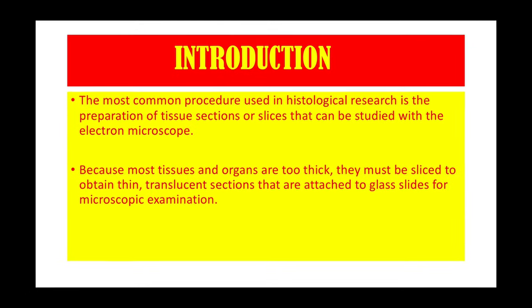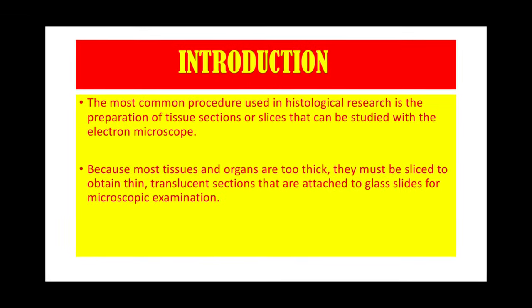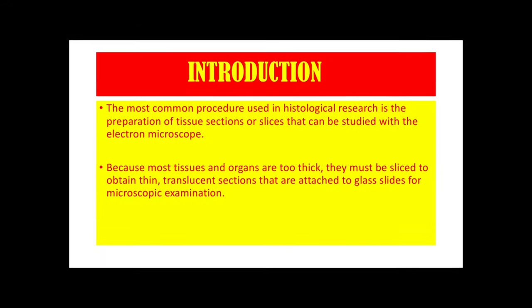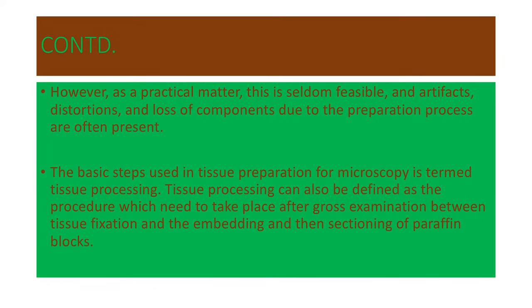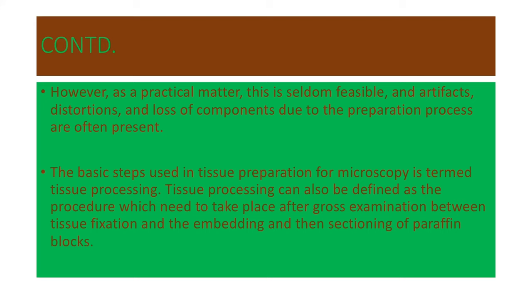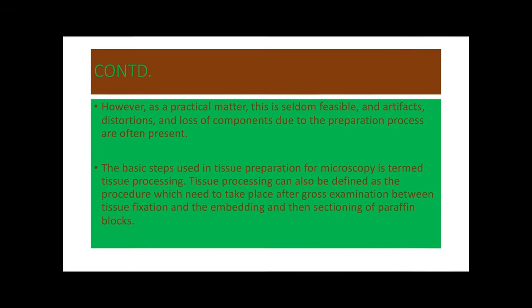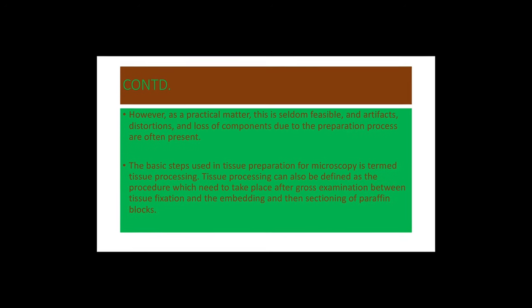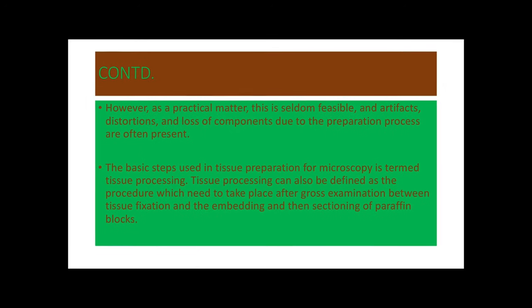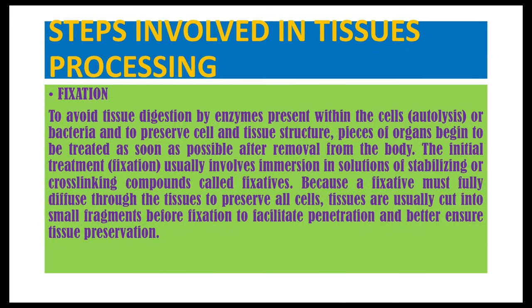Tissue processing and examination. The most common procedure used in histological research is the preparation of tissue sections or slices that can be studied with the electron microscope. Because most tissues and organs are too thick, they must be sliced to obtain thin translucent sections attached to glass slides for microscopic examination. However, artifacts, distortions, and loss of components due to the preparation process are often present. Tissue processing refers to the basic steps used in tissue preparation for microscopy, defined as the procedures that take place after gross examination, between tissue fixation and the embedding and sectioning of a paraffin block.